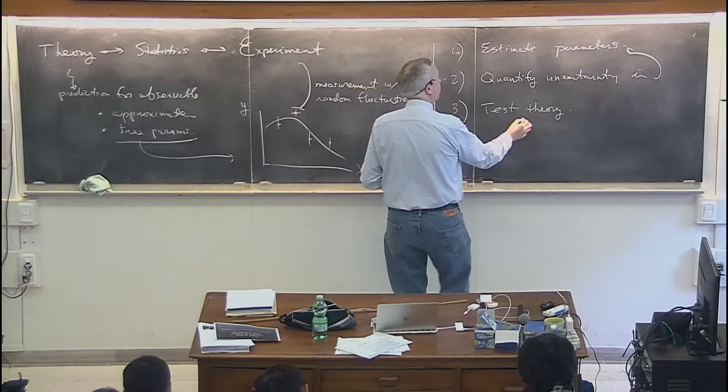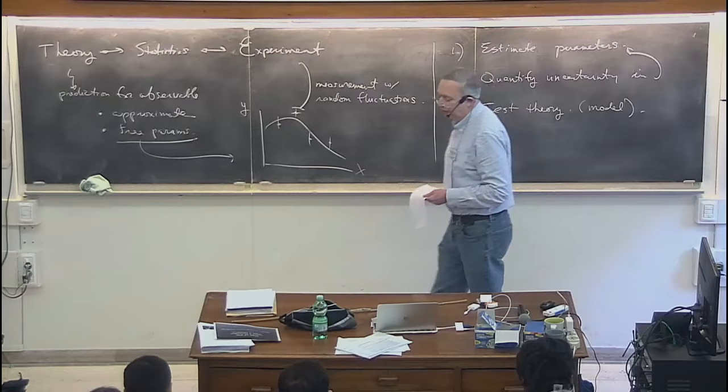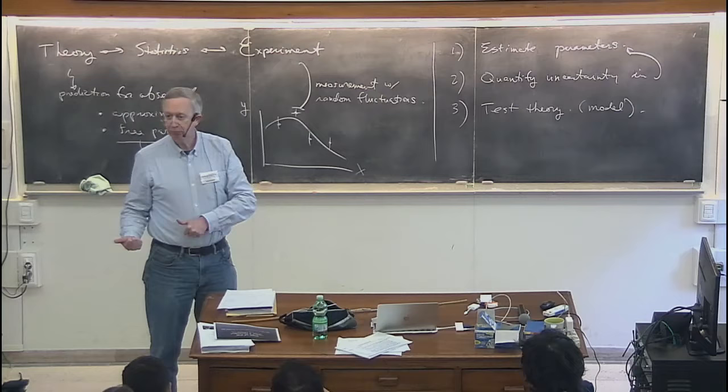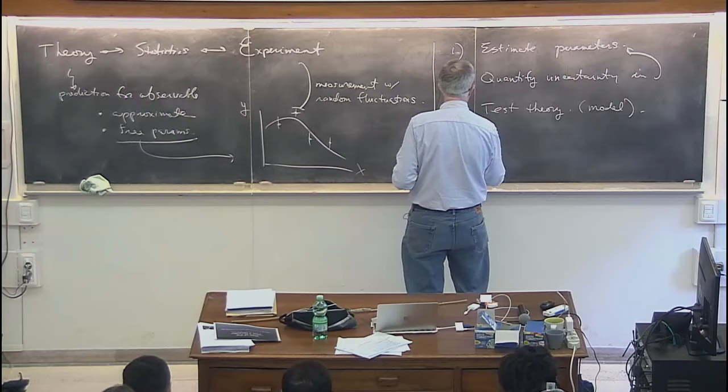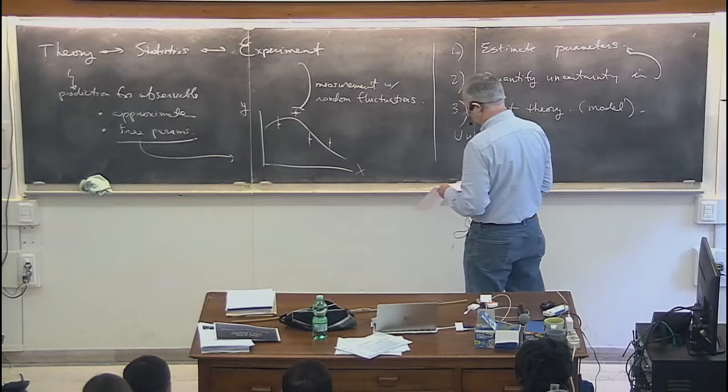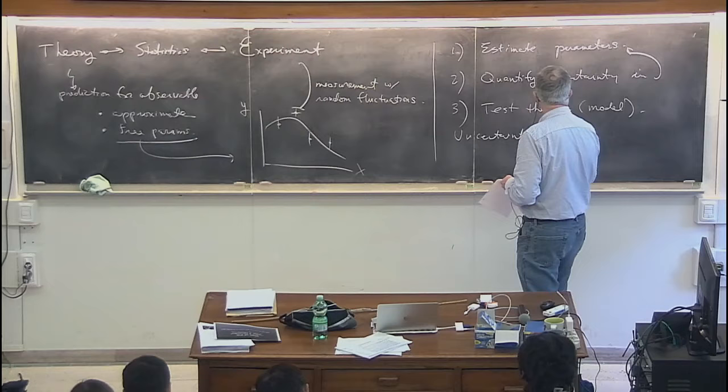I should say that I'm going to use the words theory and model interchangeably in these lectures. For me, either of those two words means a rule that makes predictions for data. There are various elements of uncertainty that enter into this game, and a lot of that is related to the randomness that I mentioned. So: randomness.